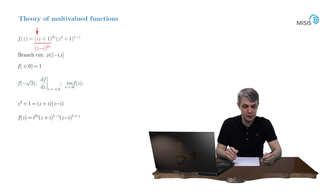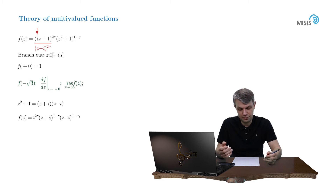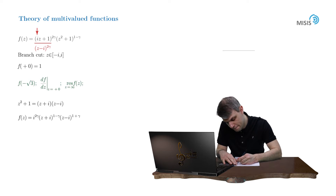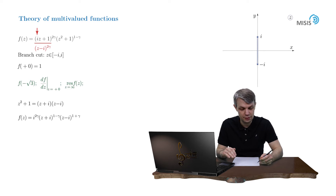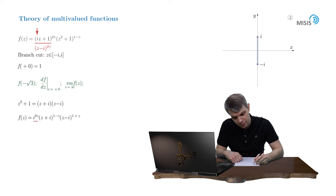Indeed we see that there are two branch points: z equals negative i and i. Now let's draw a branch cut in the complex plane. You probably immediately notice this strange i to the power of 2 gamma factor in front of our function.